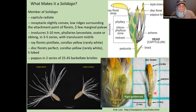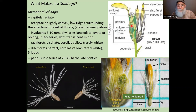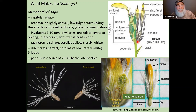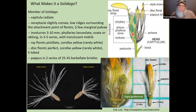Here's a photo that Richard took of a disc floret from Solidago rigida, and a nice cutaway diagram from the Astereae website showing what a capitulum looks like in Solidago — the phyllaries, including a translucent midrib, and the disc florets. No ray floret is visible in this cross-section.